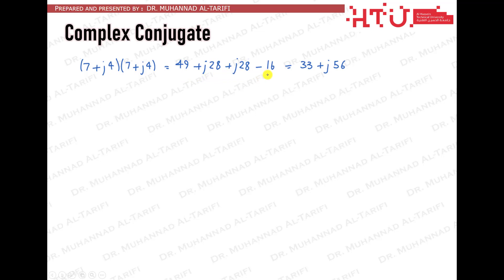We also get two imaginary terms: 7 times j4, and j4 times 7. So the total outcome is a complex number as expected, 33 plus j56. Even if we replace j with a minus j and find the square of 7 minus j4, we will end up with a complex number. This is expected as well.